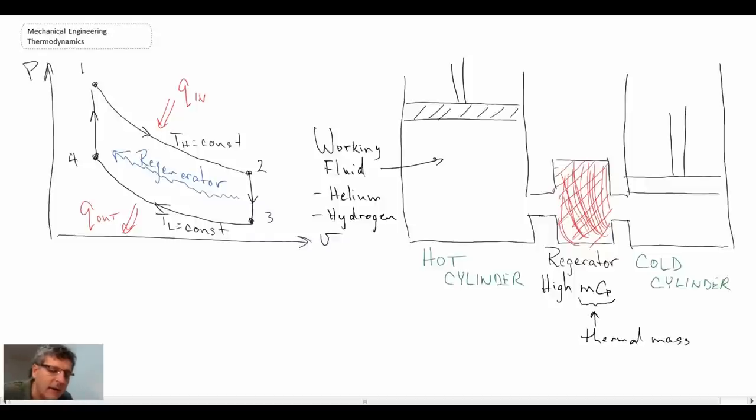Now, what is happening here is the gas is going from the hot cylinder to the cold and back and forth. So we have gas here and we have gas here. Some of the processes, that is two through three and one through four, those are constant volume processes. And when those are taking place, the piston and the cylinder are moving in a manner that the two pistons are moving in a manner that constant volume is preserved within our system.